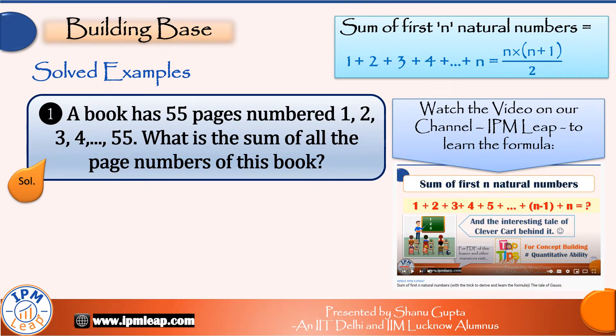A related and much simpler question is: a book has 55 pages numbered 1, 2, 3, 4 up till 55. What is the sum of all the page numbers of this book? Now clearly in a book, the page numbers are all consecutive natural numbers, and we know that the sum of first n natural numbers is n(n+1)/2.